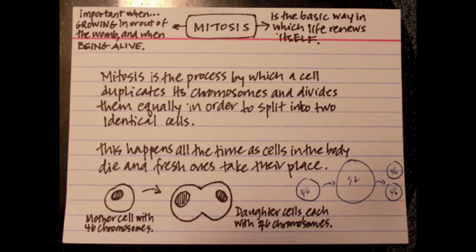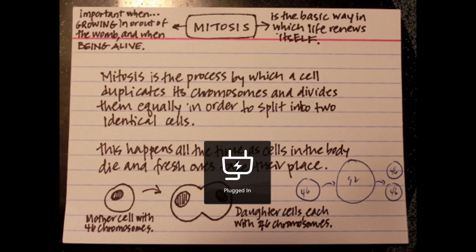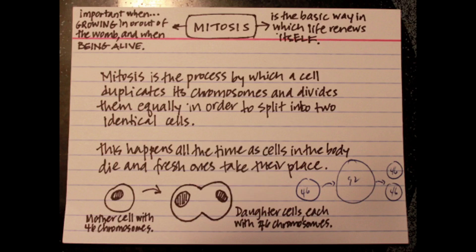Mitosis is nuclear division giving rise to genetically identical cells. The roles of mitosis include growth, repair of damaged tissues, replacement of cells, and asexual reproduction.